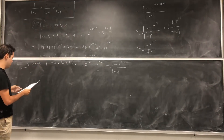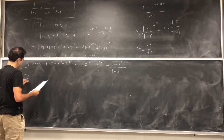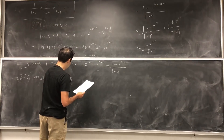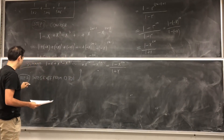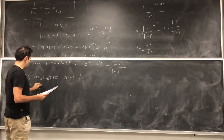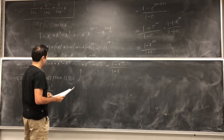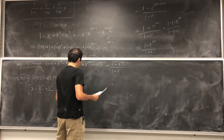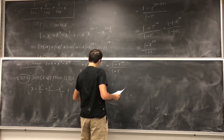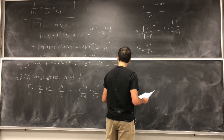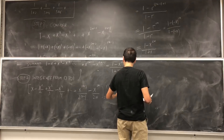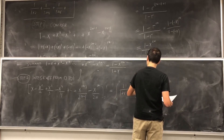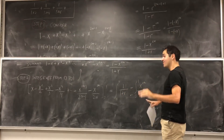Step 2: integrate from 0 to 1. Integrate this stuff from 0 to 1. So what do we have? x minus x squared over 2, plus x cubed over 3, minus x to the 4th over 4, dot dot dot, plus x to the 2n minus 1 over 2n minus 1, minus x to the 2n over 2n, from 0 to 1. This equals the integral from 0 to 1 of 1 over 1 plus x, minus the integral from 0 to 1 of x to the 2n over 1 plus x, dx.